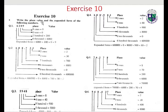Exercise ten: write the place value and expanded form of the following numbers. 6,209: six thousands, two hundreds, zero tens, and nine ones — 6,000 plus 200 plus 0 plus 9 equals 6,209. Question number two: 60,000.